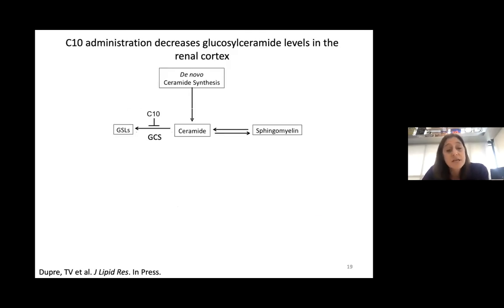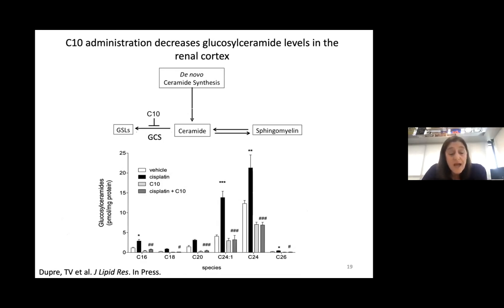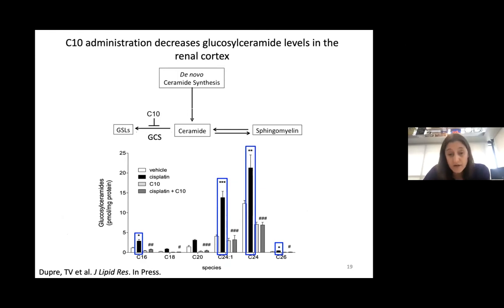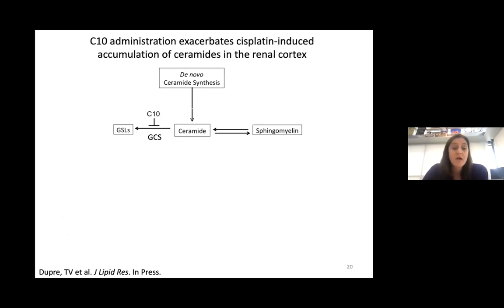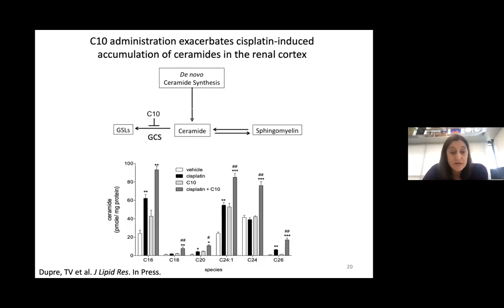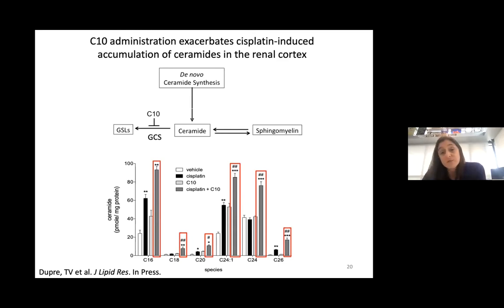When we inhibited glucosylceramide synthase, the hexosylceramide increase with cisplatin was blocked as predicted. But what happened with ceramides actually surprised Jim — we still got the ceramide increase, and in fact got more of a ceramide increase. This suggests that the ceramide generated is normally used to make glucosylceramide, so when you block that, ceramide builds up further.